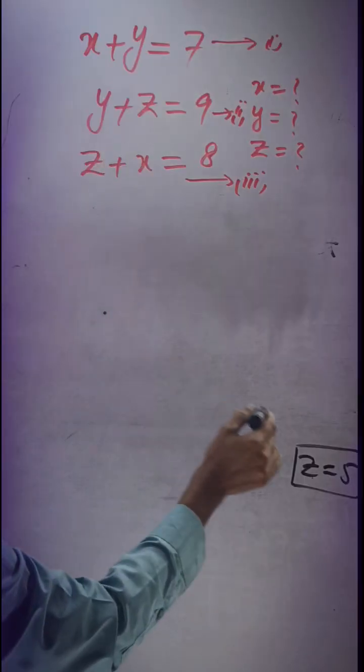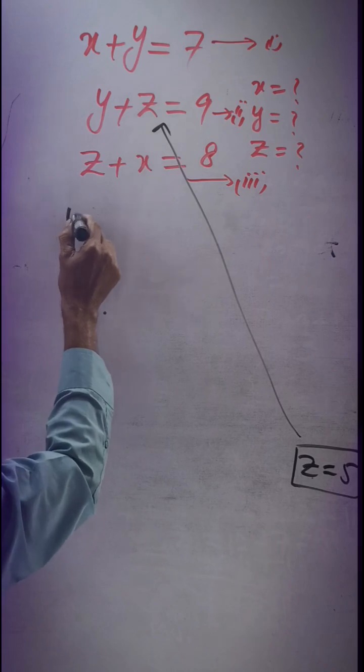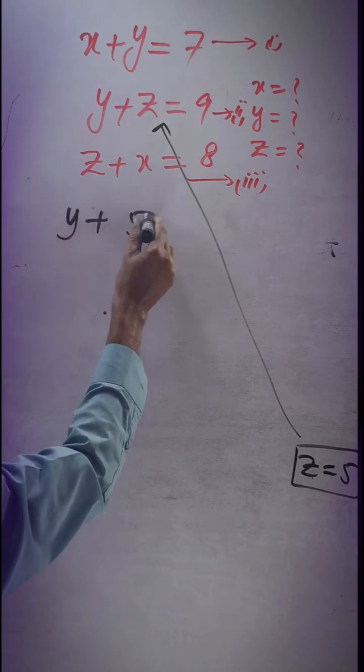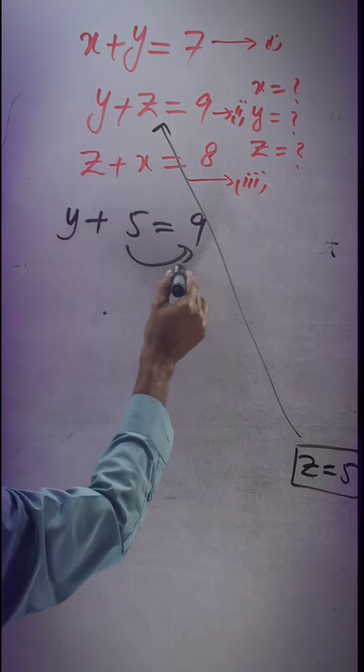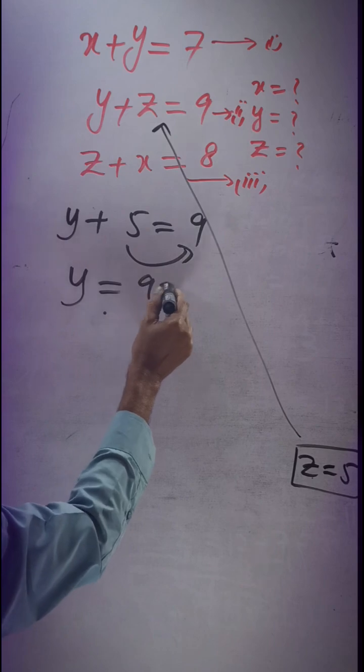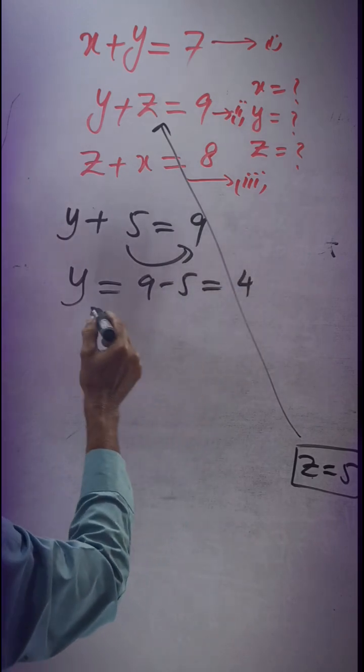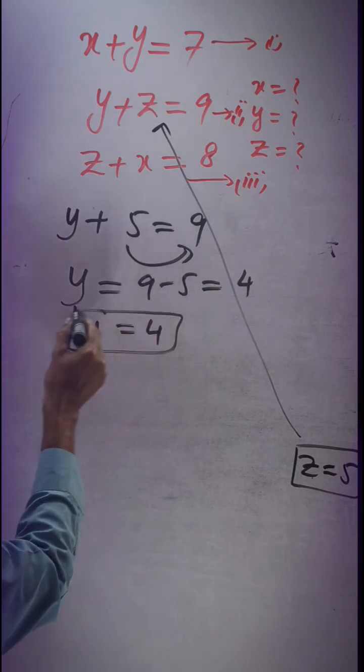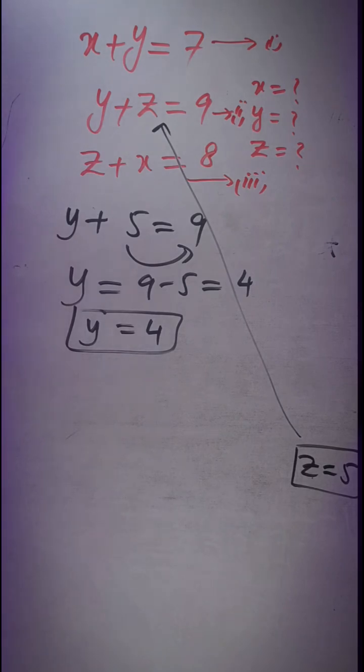Similarly, for equation 2: y plus 5 equals 9. We transfer to get 9 minus 5 equals 4. So y equals 4.